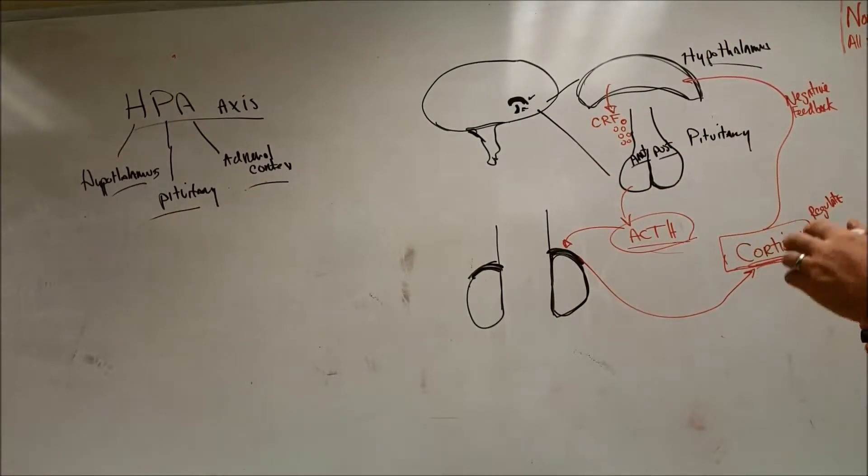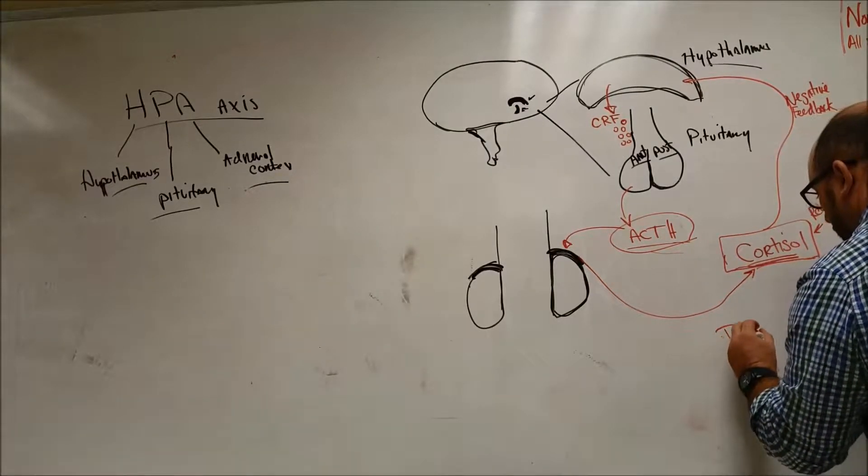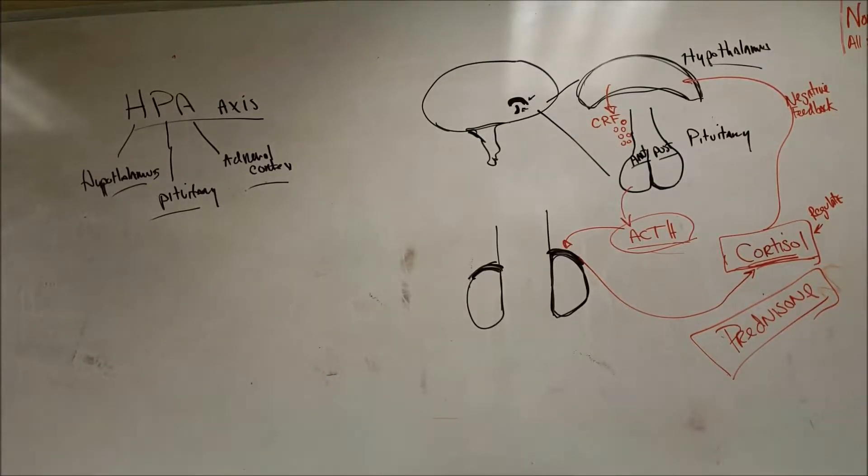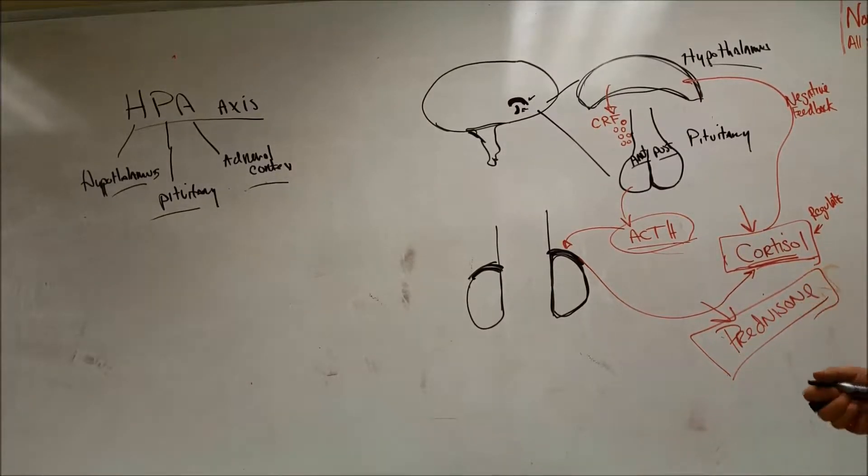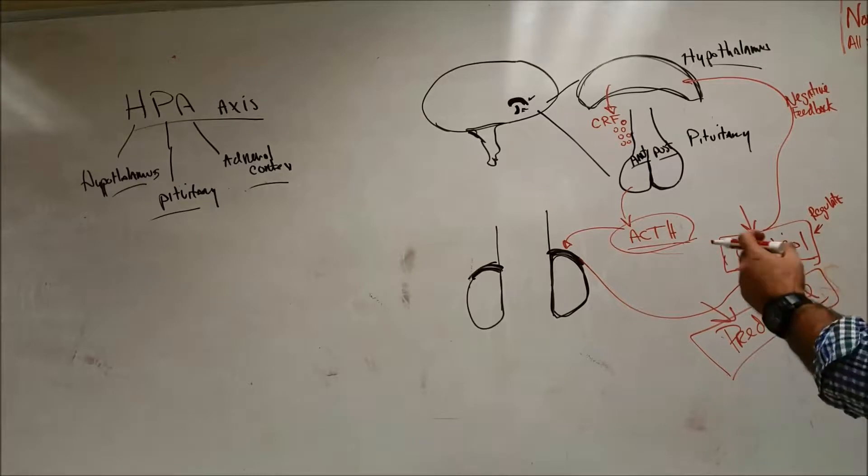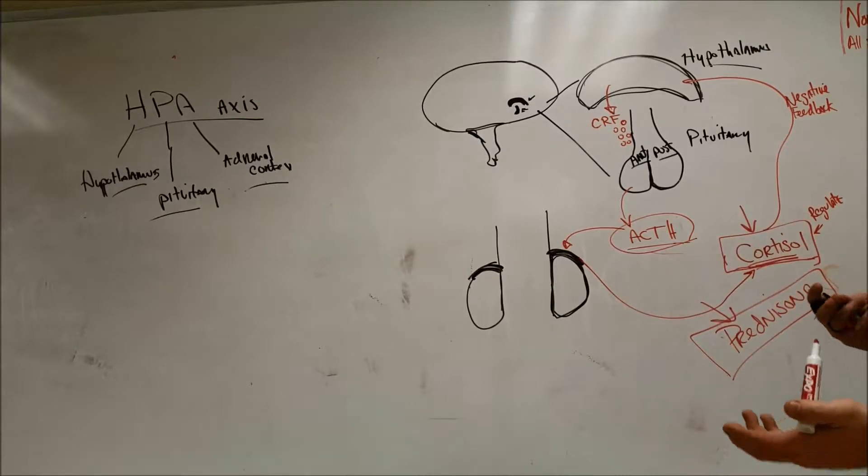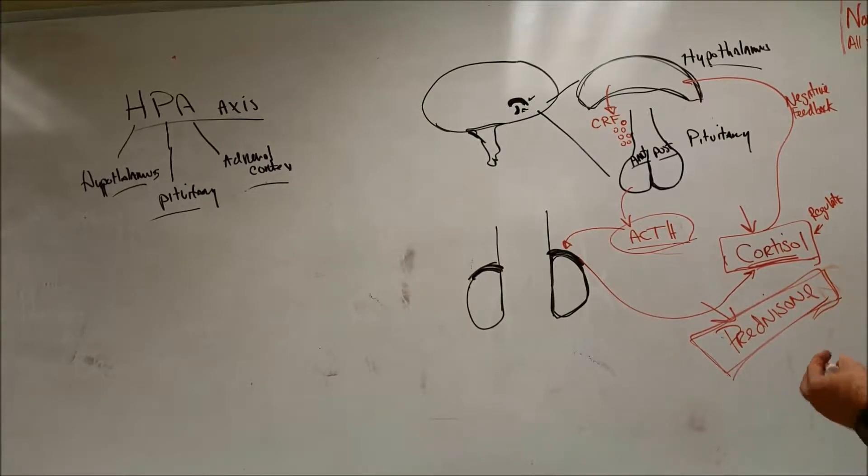So it causes negative feedback back to the hypothalamus, which controls release of CRF. If this level gets high, it's going to cause negative feedback. The hypothalamus, in most cases, will shut down, stop producing CRF, stop stimulating the pituitary to release ACTH, and stop the production of cortisol from the adrenal cortex. If this level gets low, then you'd increase your CRF, and it would start pumping out more to get to a normal level. The body's constantly in regulation to maintain homeostasis.